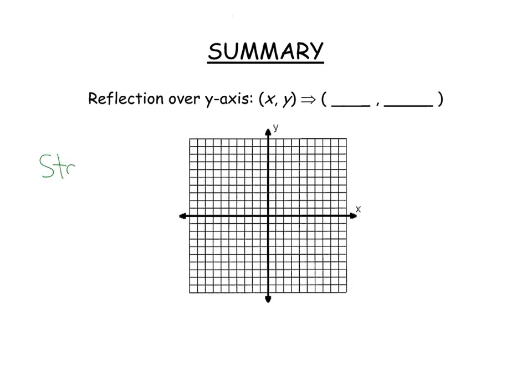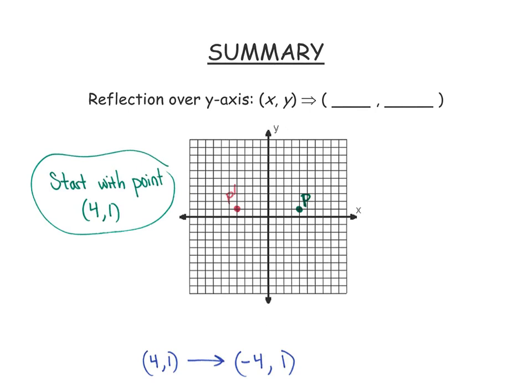Again, start with 0.41. When you want to find out a rule for any transformation, just start with 0.41. Where does that go? Over the y-axis, p prime would go to negative 4, 1. This rule is I'm taking the opposite of x, and I'm keeping the y the same.